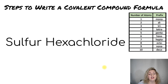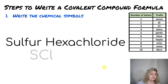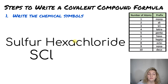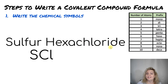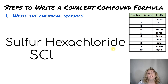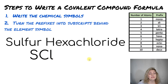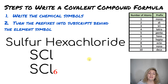Let's do one more: sulfur hexachloride. Step one — write your chemical symbols. We're writing sulfur. We're not looking at the prefix 'hexa' to figure out what element this is; instead we're looking at the second half, which is 'chloride.' Remember, you're not going to find 'chloride' on the periodic table — the ending has been altered to '-ide.' So really it's chlorine on the periodic table, and we write that Cl down.